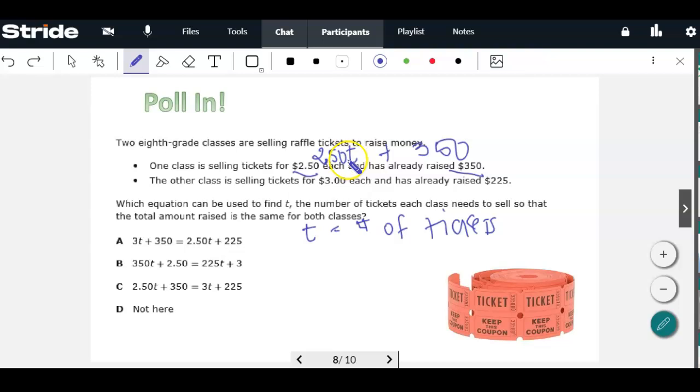And you might be able to eliminate some just from that. So look at what we have, $2.50 per ticket plus $350. That's what makes this one wrong. And look at this. So this one looks good. Let's just make sure the second part of that is correct. The other class is $3 per ticket. Looks like they didn't put the decimal, so we'll just put 3T. They've already raised $225, so plus $225. Yes, that's it. And for practice, you can solve for T and see what that answer is.